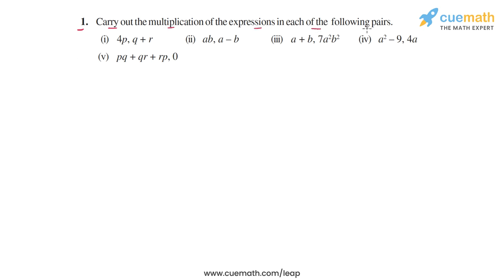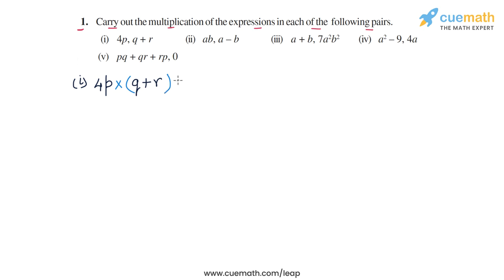In question 1, we have to carry out the multiplication of the expressions in each of the following pairs. Let's start with the first part. The two expressions are 4p and (q + r), and we have to multiply these two expressions. The first one is a monomial and the second one is a binomial, so we can use the distributive law and multiply term by term.